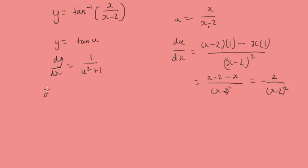And now, we need to slot everything in to give us our dy by dx will be 1 over, this is going to be x over x minus 2 plus 1, that's squared, multiplied by minus 2 over x minus 2 squared.